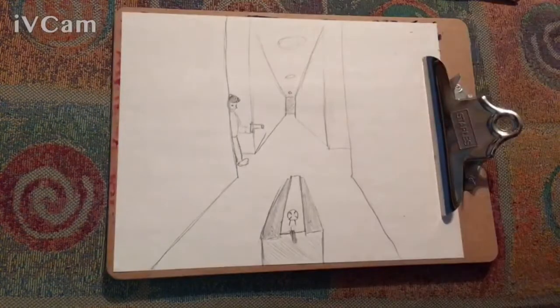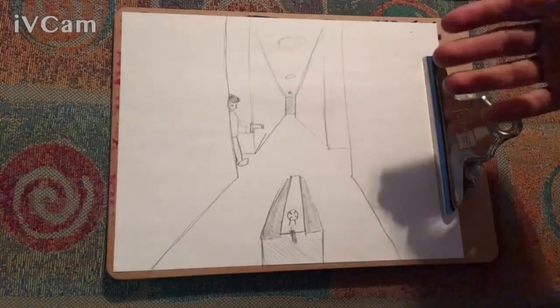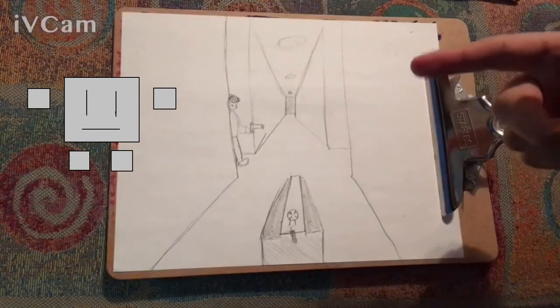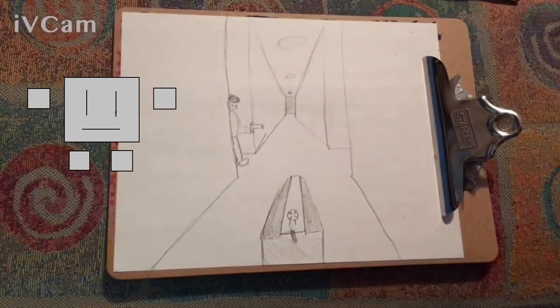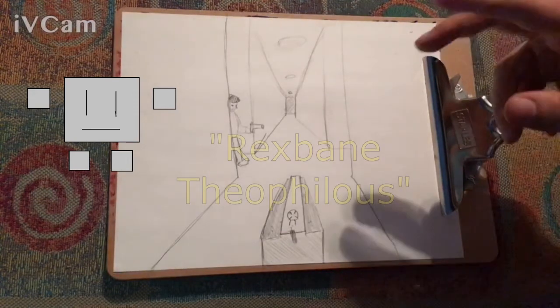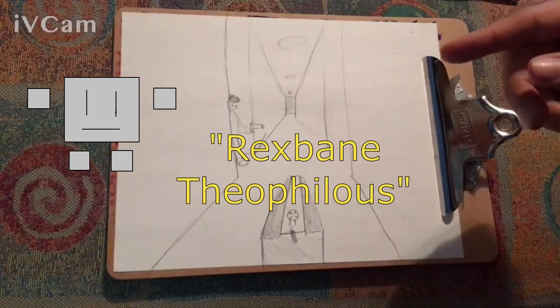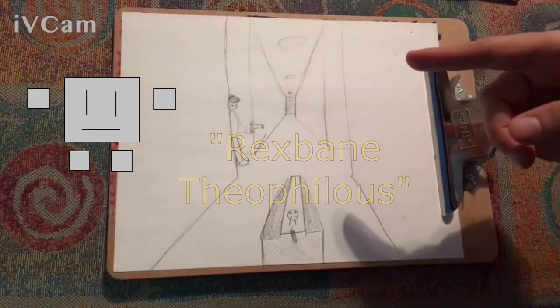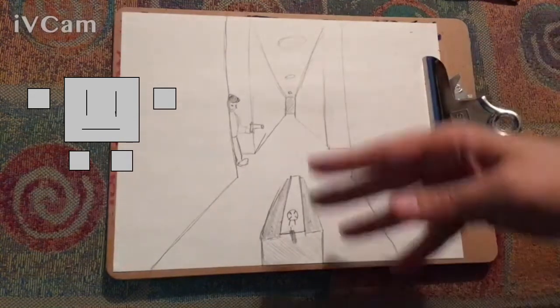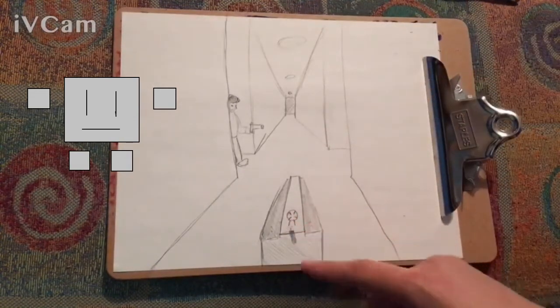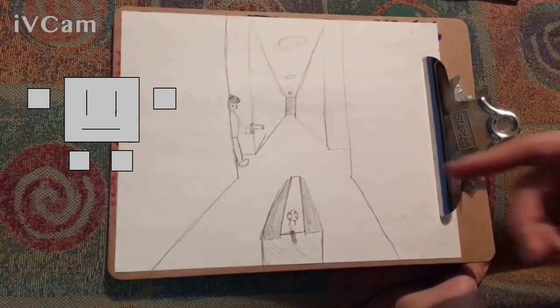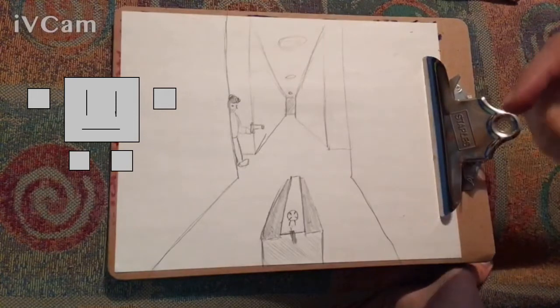So once it's drawn, you play it pretty much the same way you play any other paper computer game. To demonstrate that, today Tutorial Bot will be playing the role of the main character in this game, who I am calling Rexbane Theophilus. So you are Rexbane, and you find yourself in this facility. This is you. We're looking from your perspective, and this is a gun you're holding. I know my drawing is not the best, but you will have to take on this role. So what do you do?